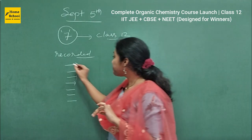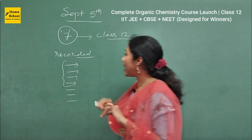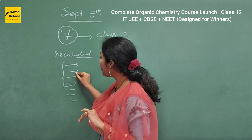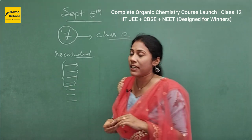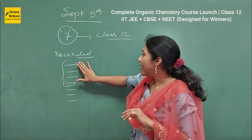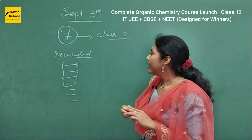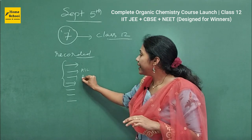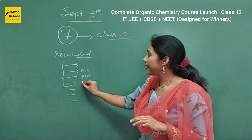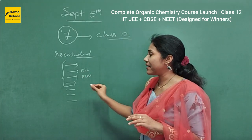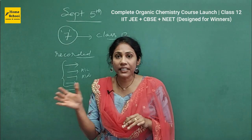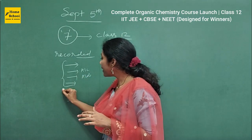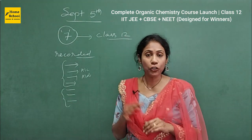As of now, the course has the four major organic chapters: alkyl halide, aryl halide, alcohols, phenols, ethers, aldehydes, ketones and carboxylic acids, and amines. But gradually, within a month, we will upload the remaining three chapters in the course.